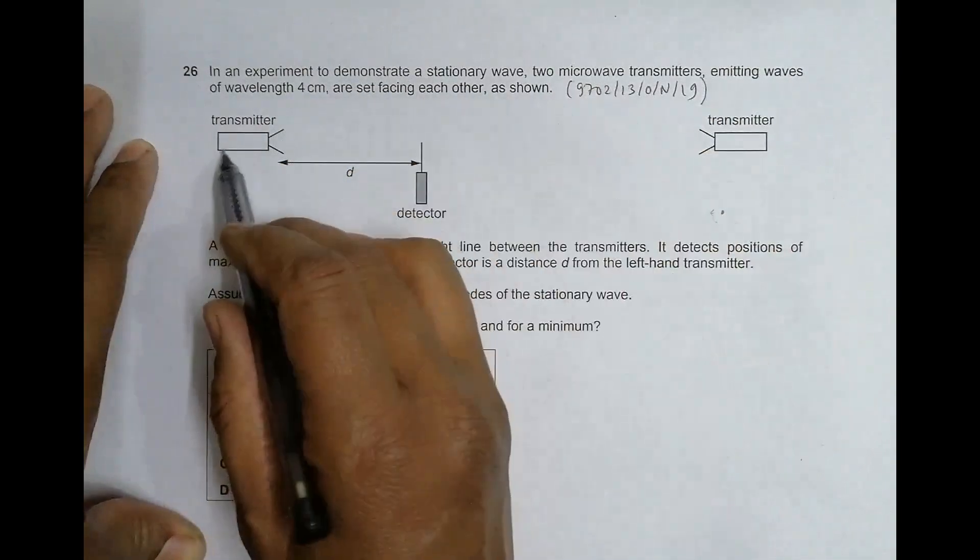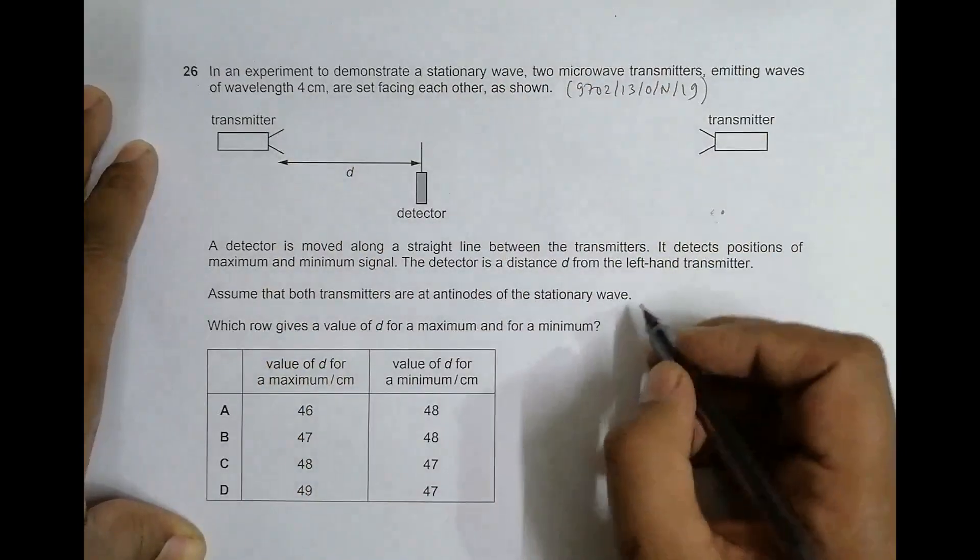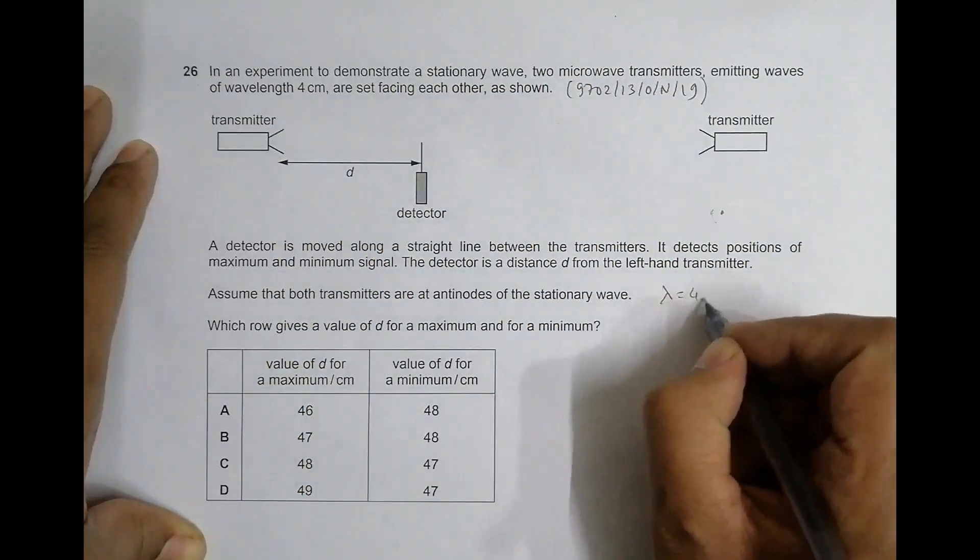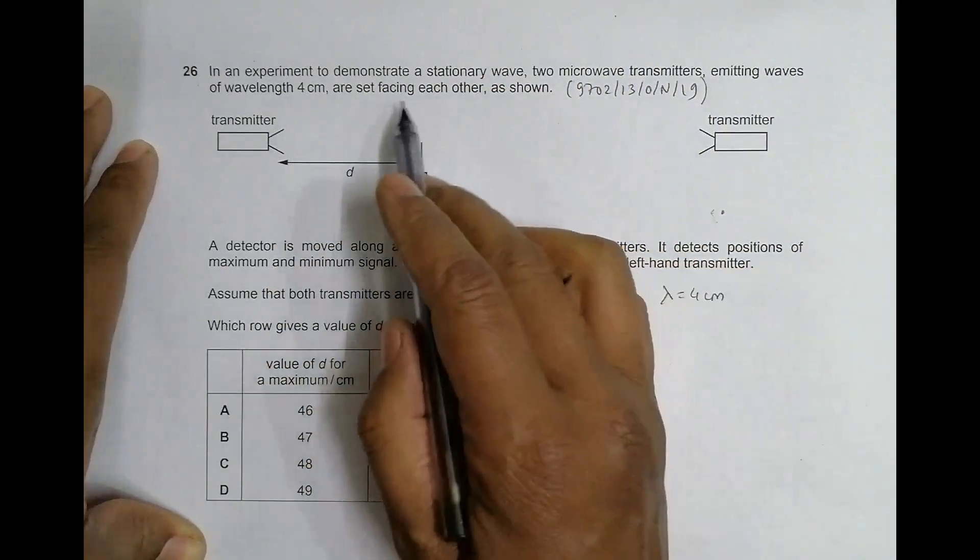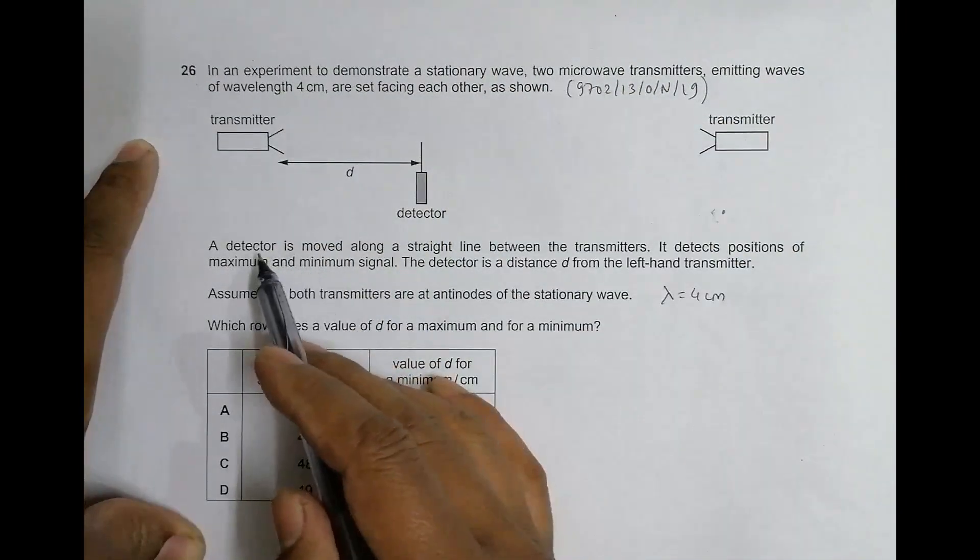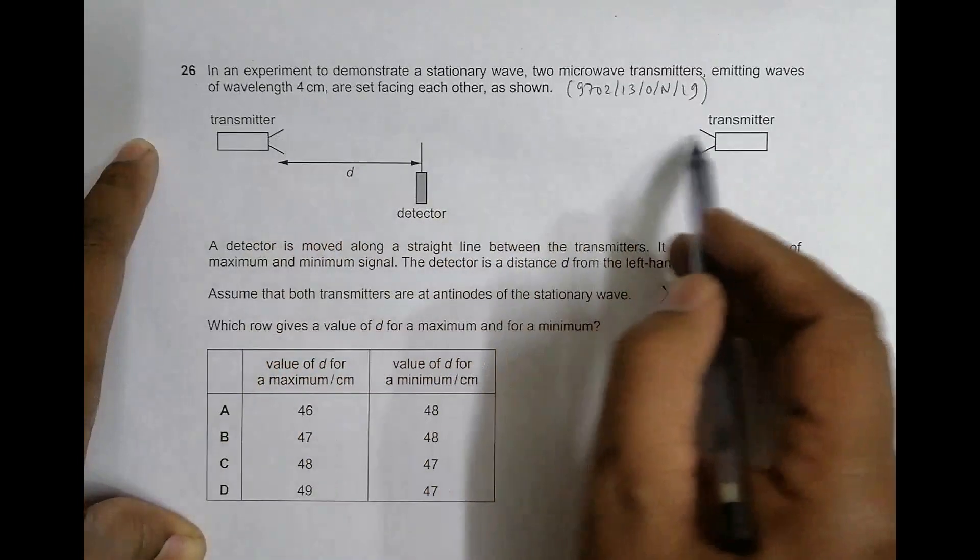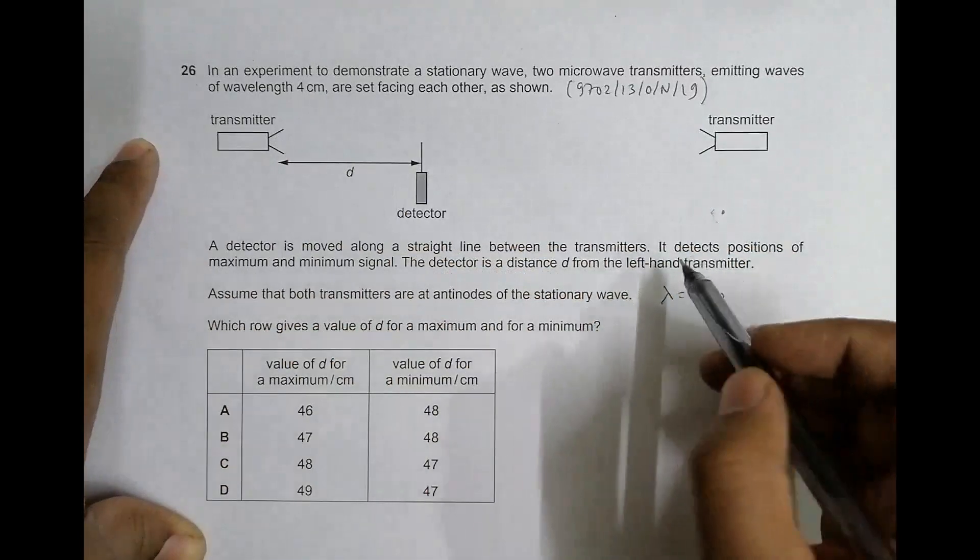So lambda equals 4 centimeters. The transmitters are set facing each other as shown. A detector is moved along a straight line between the transmitters from here to here or here to here in a straight line.